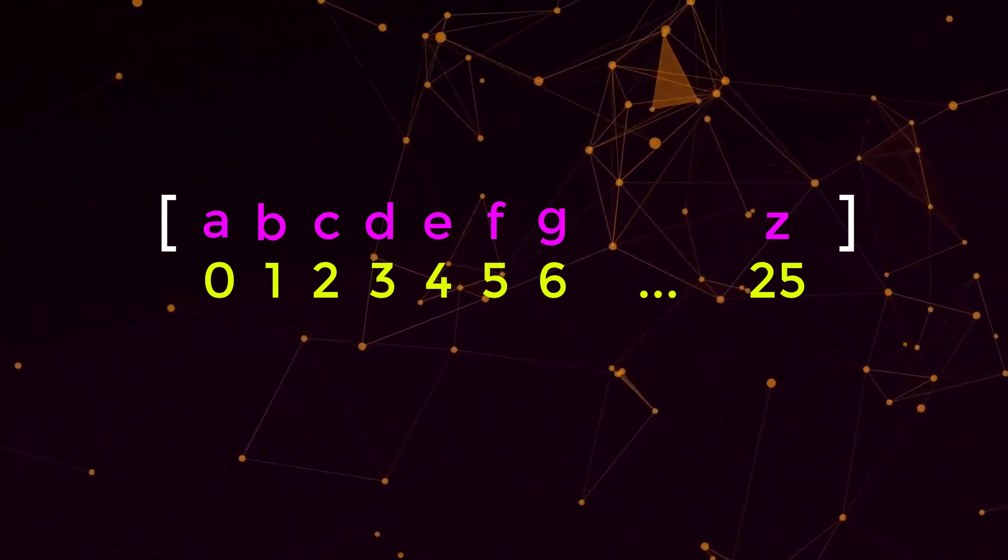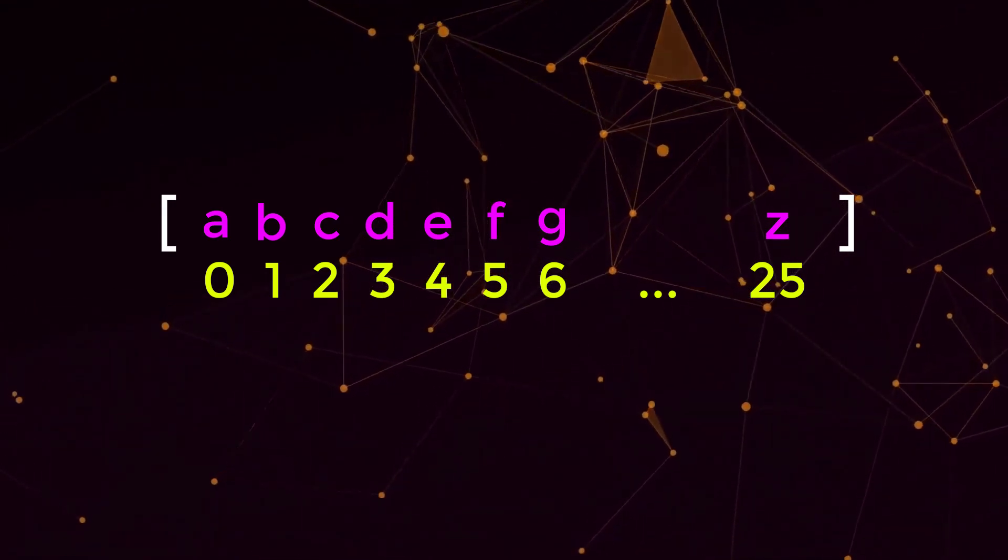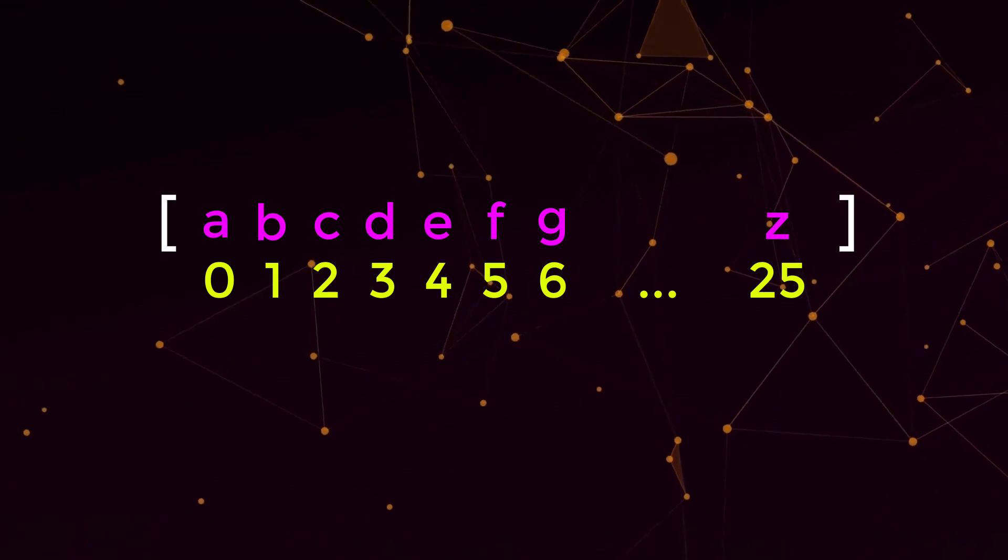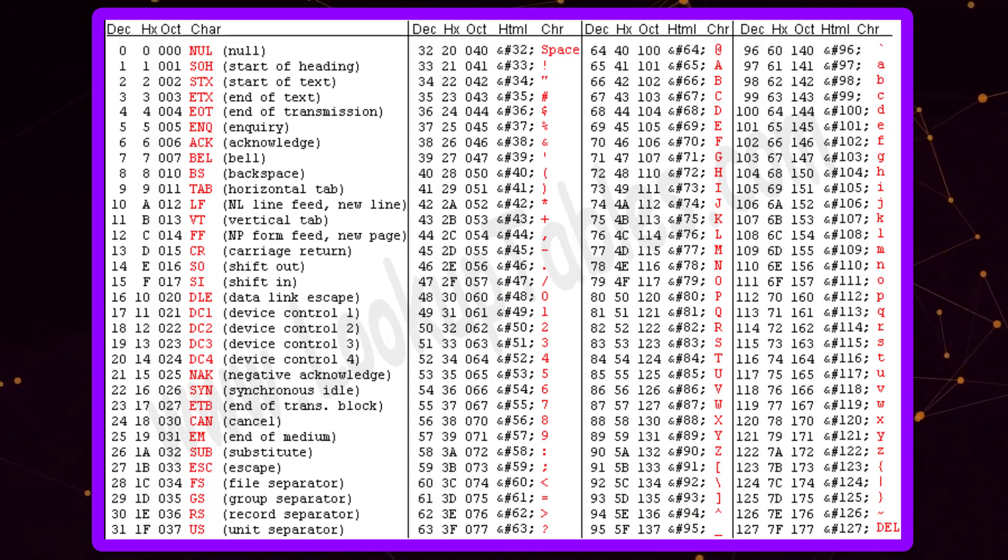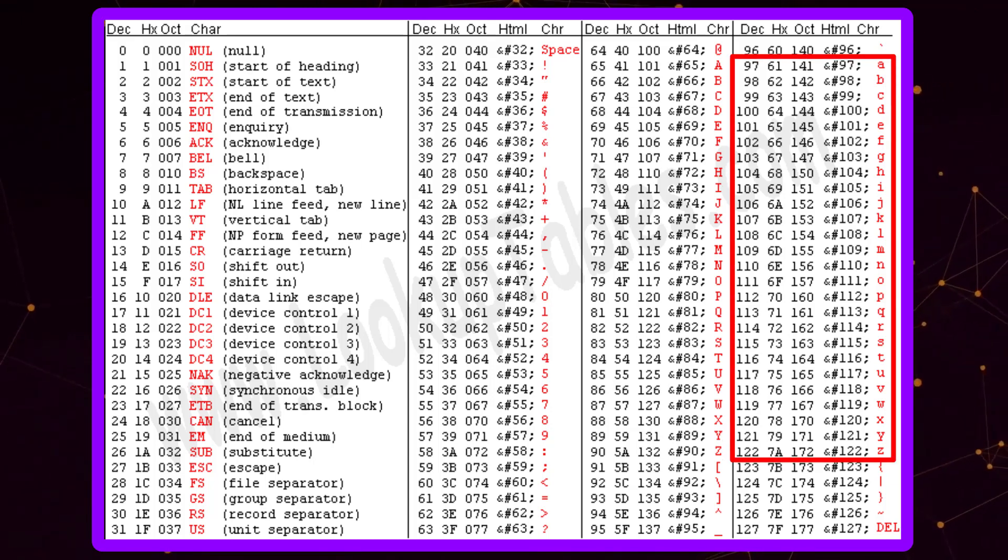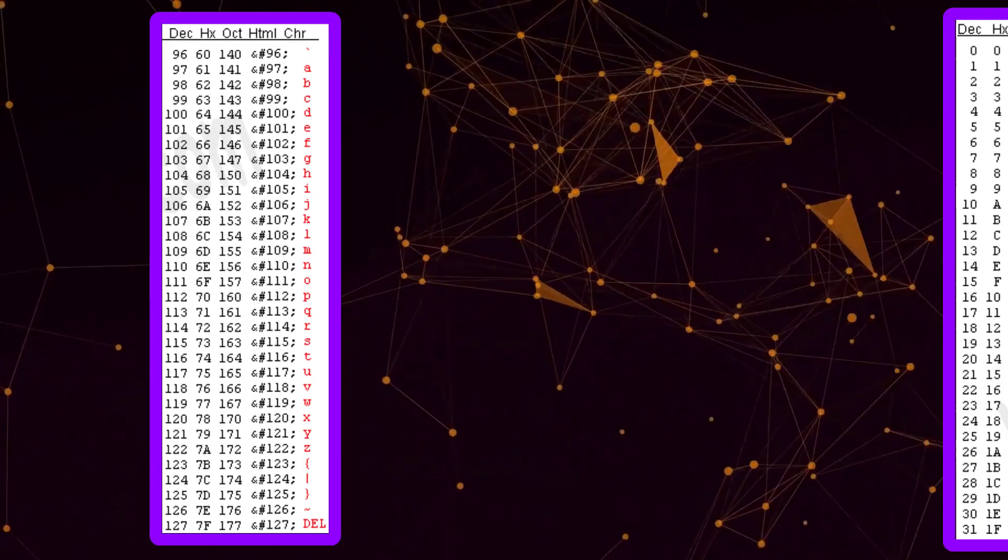So I'm sure you might be wondering, how do we actually map a character to an index in an integer array? So if we look at an ASCII table, we can see that all lowercase letters have an appropriate decimal number tied to them.